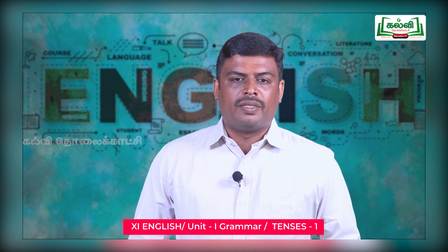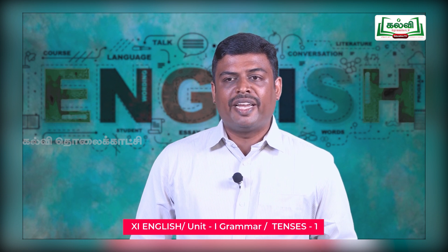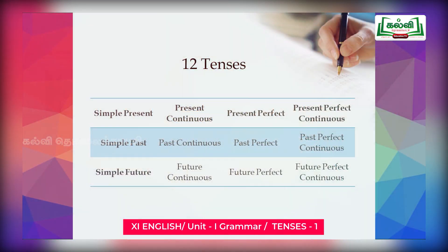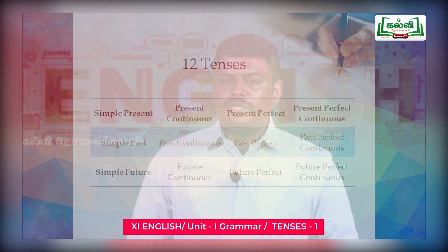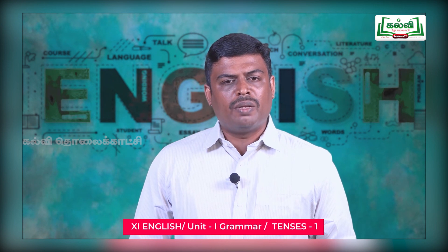Now you come to tenses. You should know the number of tenses — there are 12 tenses: simple present, simple past, simple future, present continuous, past continuous, future continuous, present perfect, past perfect, future perfect, present perfect continuous, past perfect continuous, and future perfect continuous. You should be very thorough with all these names. Next, you come to the structure of each and every tense.